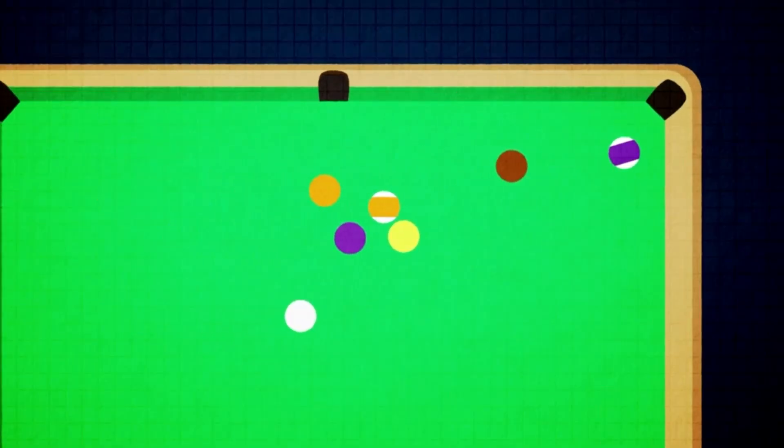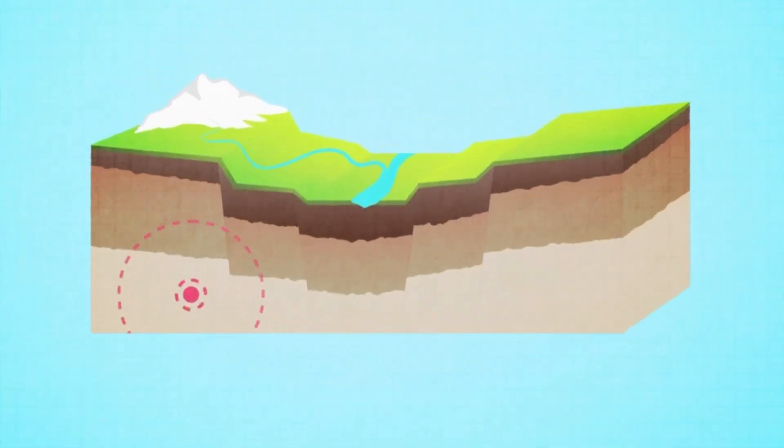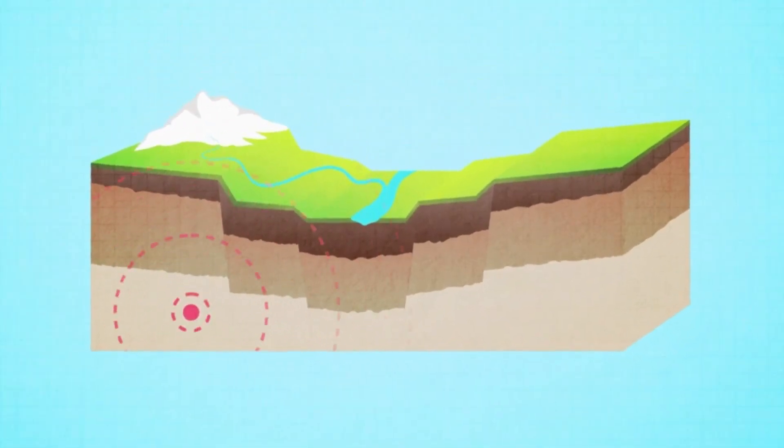Energy can also be transferred mechanically through movement when the motion or position of an object changes such as one ball hitting another on a pool table. Mechanical waves such as sound waves or the seismic waves created in an earthquake can also transfer energy mechanically.